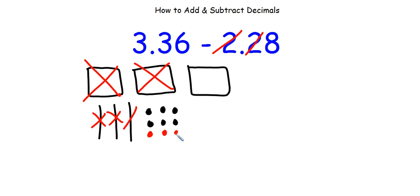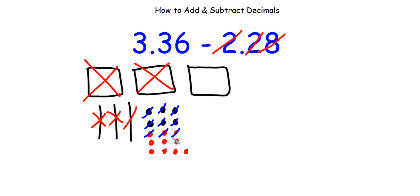Remember, each rod is made up of 10 hundredths because 1 tenth is made up of 10 hundredths. So I regroup this rod into 10 dots: 1, 2, 3, 4, 5, 6, 7, 8, 9, 10. Now I can take away 8 of them: 1, 2, 3, 4, 5, 6, 7, 8. Done — I've taken away everything I need.